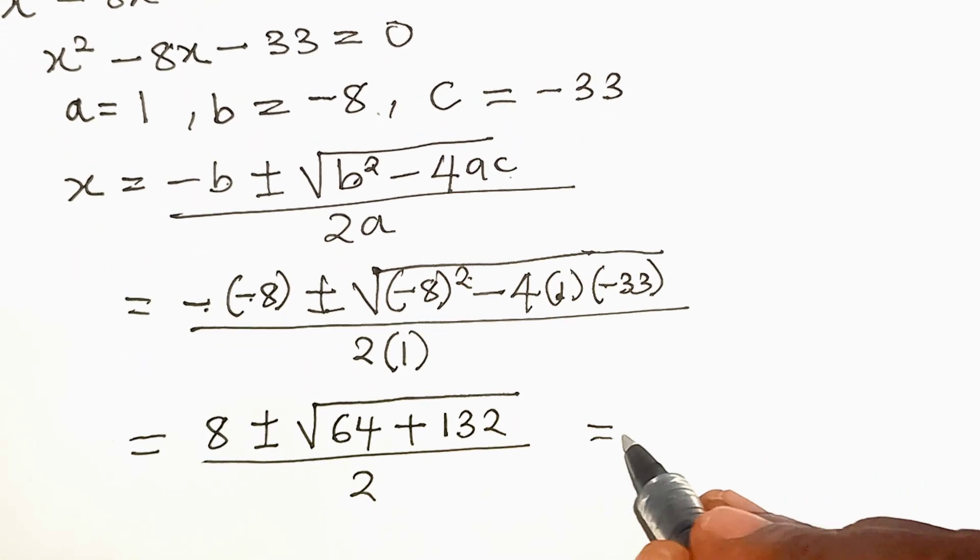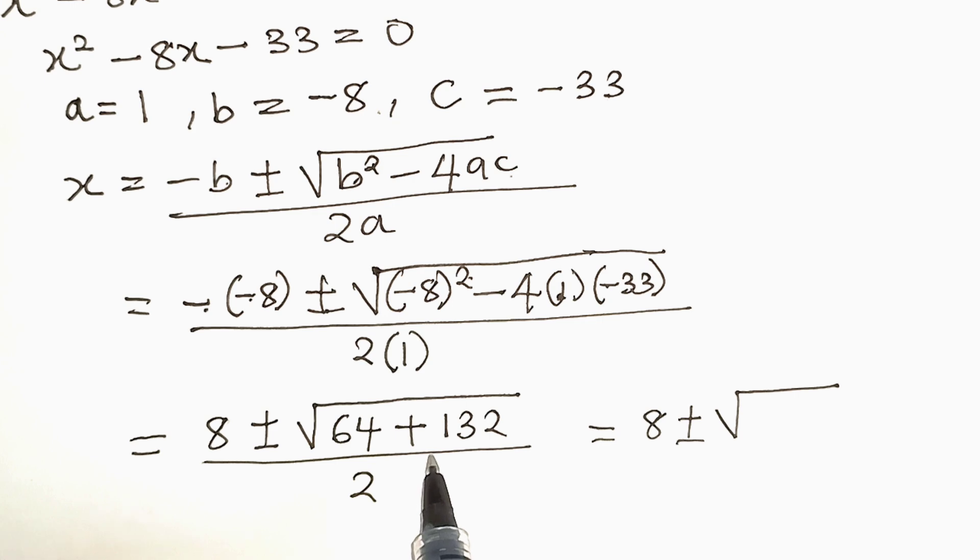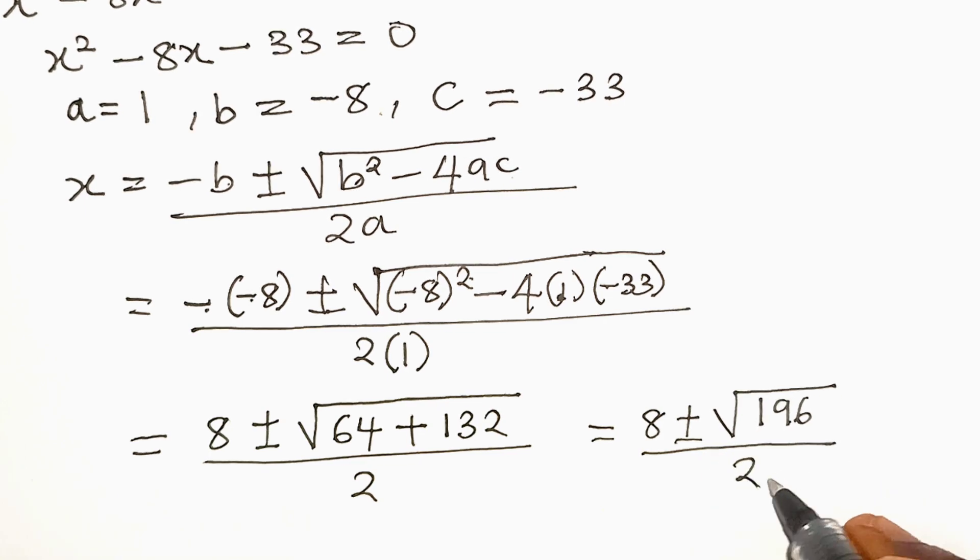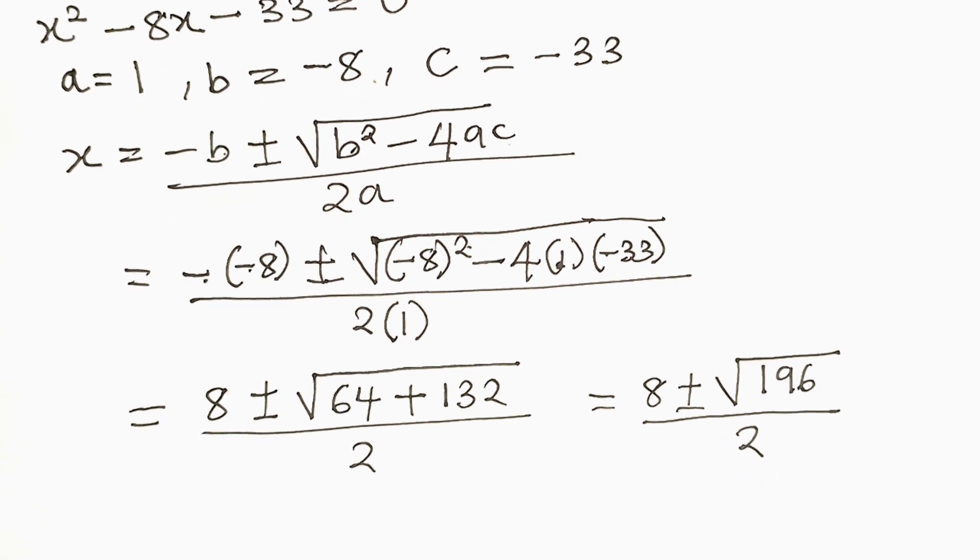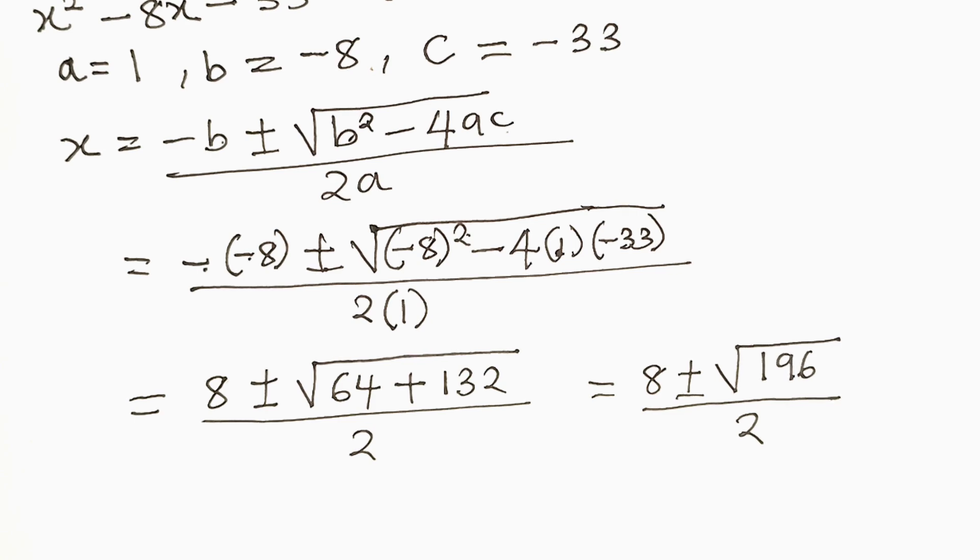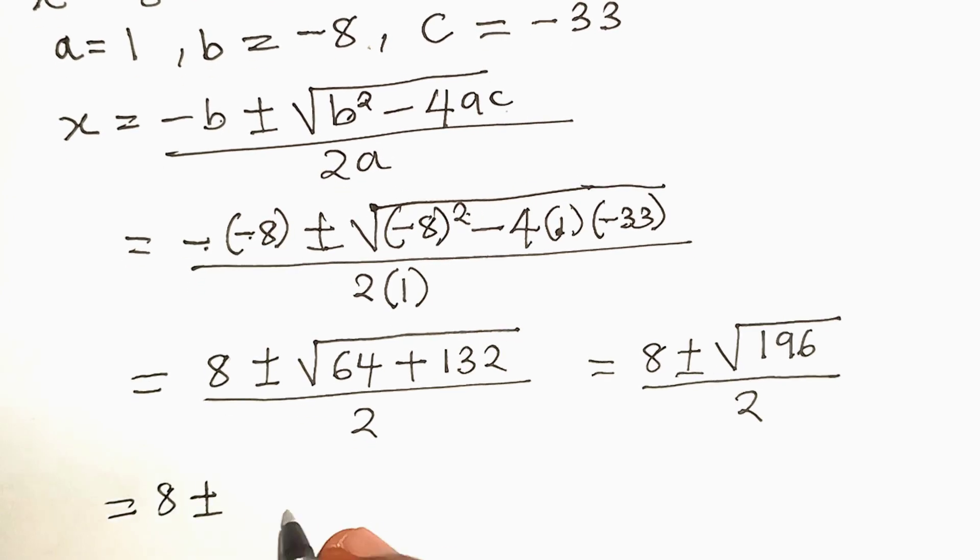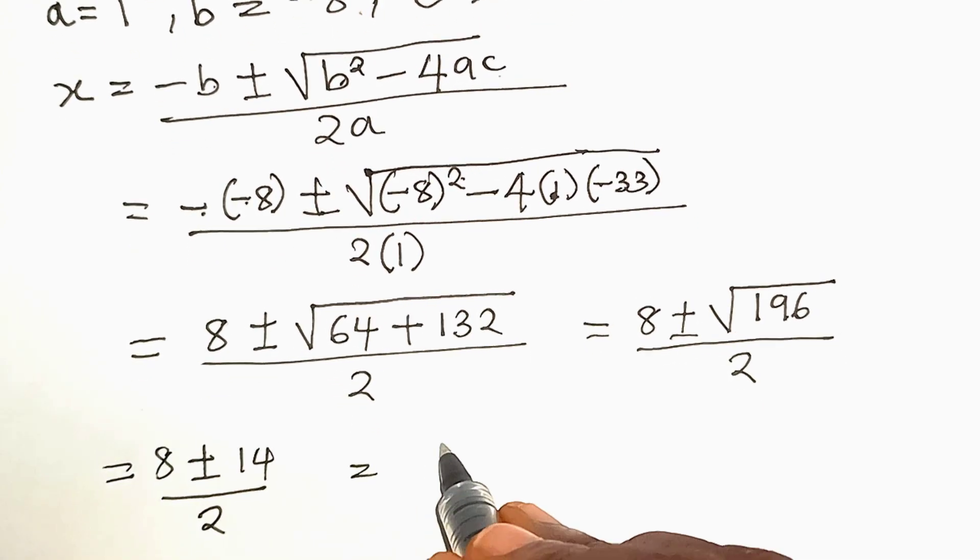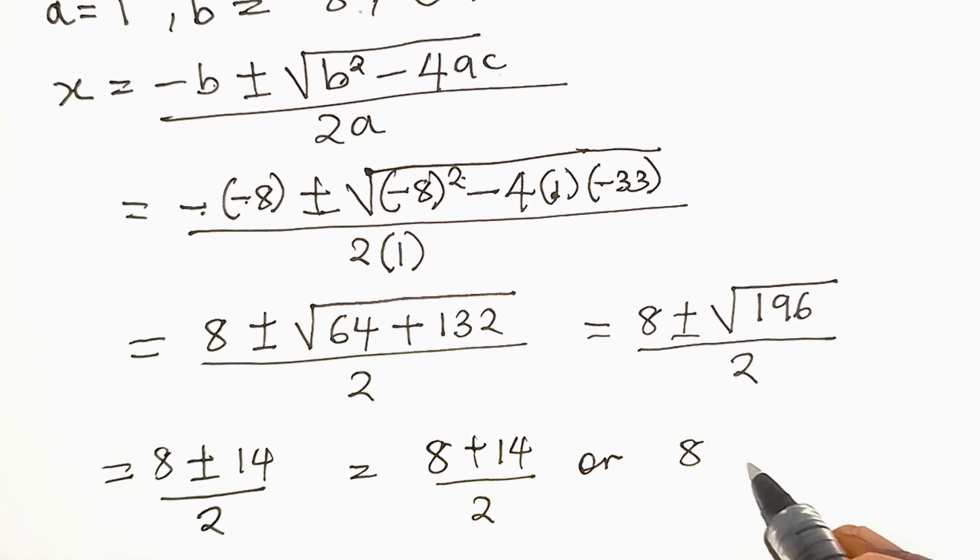So this gives us 8 plus or minus roots, 64 plus 132 will give us 196, all divided by 2. Now we need to find the square root of 196. 196 is a perfect square. Its square root is 14. So we have equal to 8 plus or minus 14 divided by 2.